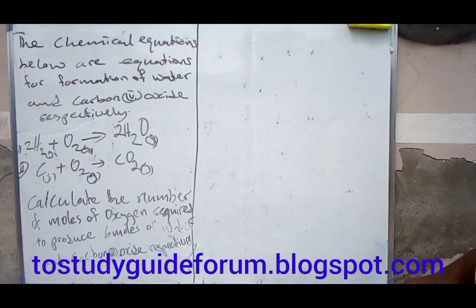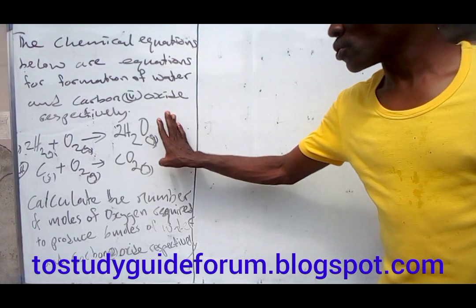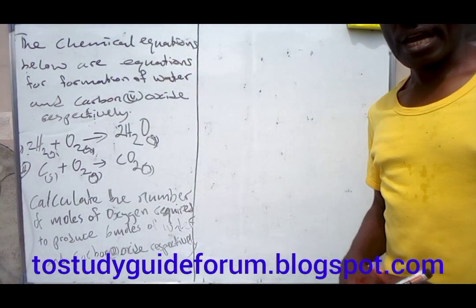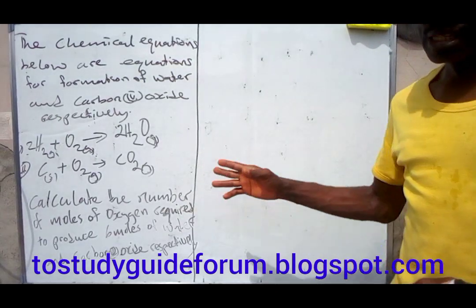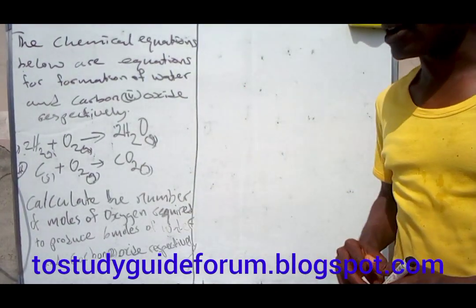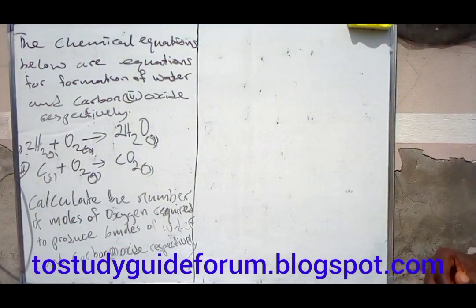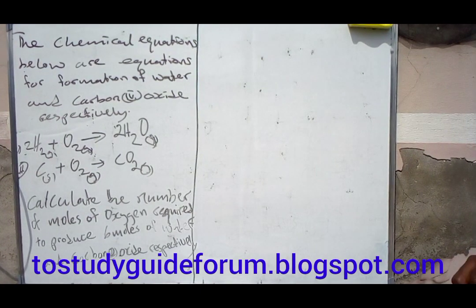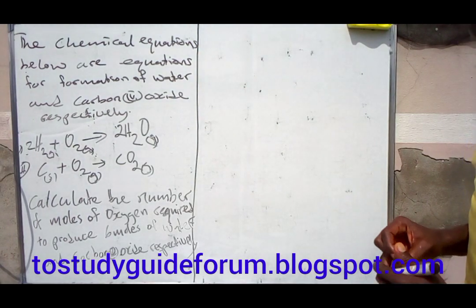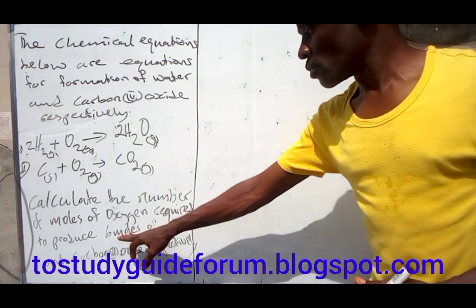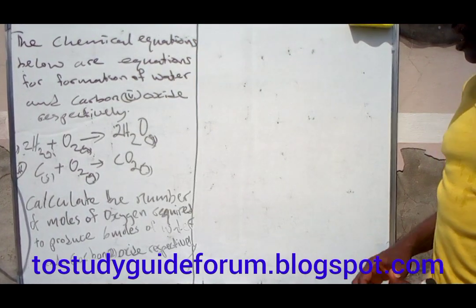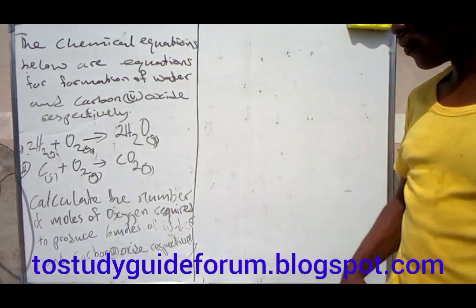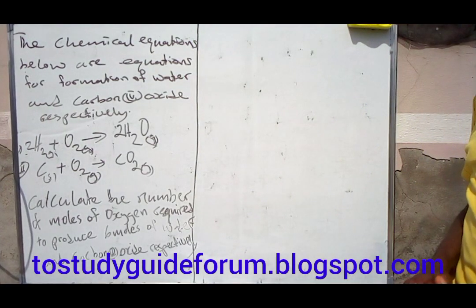Today we're going to be learning about how to use chemical equations in solving problems. Like the other one where we learned how to balance chemical equations, this time we are going to learn how to use information from a chemical equation in solving problems. The question here asks us to find the number of moles of oxygen required to produce six moles of water and carbon dioxide respectively.